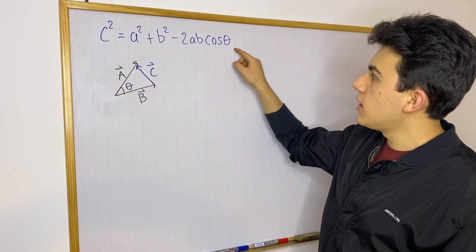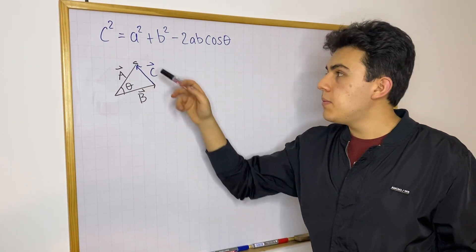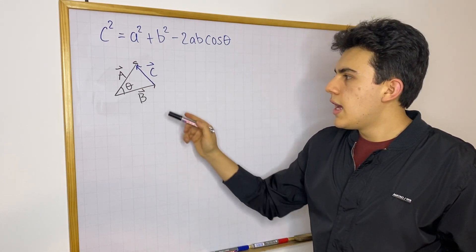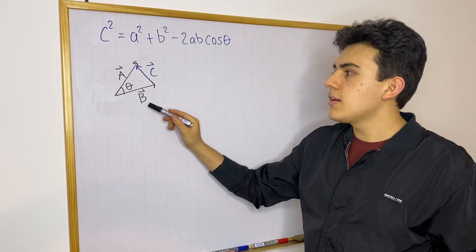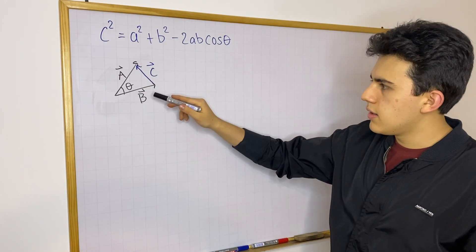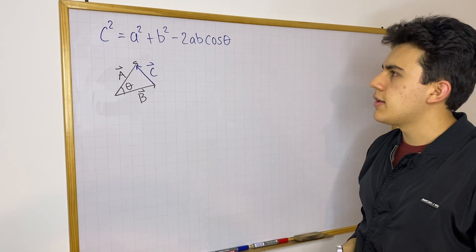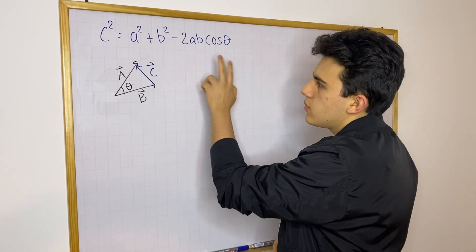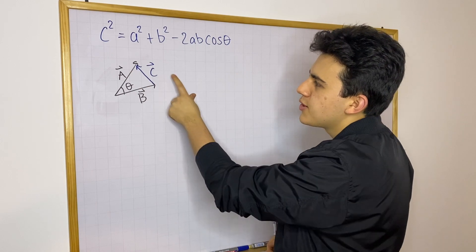When we write the law of cosines using this notation, A, B, and C are lengths — they are magnitudes. In this case, we're going to use the magnitudes of vectors A, B, and C. So let me just start off. This is just going to be a direct proof.